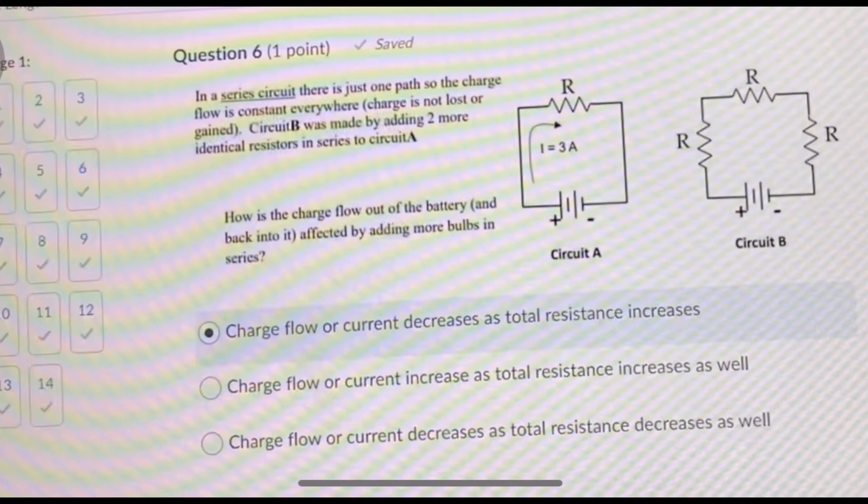Okay, I'm going to read. In a series circuit there is just one path, so the charge flow is constant everywhere. Charge is not lost or gained. Circuit B was made by adding two identical resistors in series to circuit A. How is the charge flow out of the battery and back into it affected by adding more bulbs in the series? Bulbs are like loads on your circuits. Whatever you add to a circuit takes away from it for its own good. So if I add something and it's taking away from me for its own good, then it's a load.